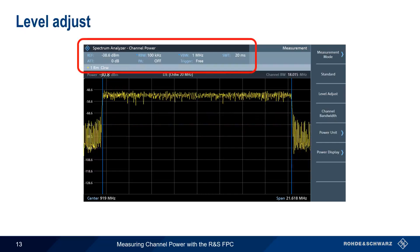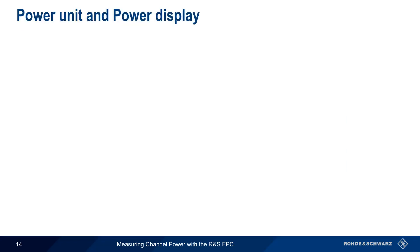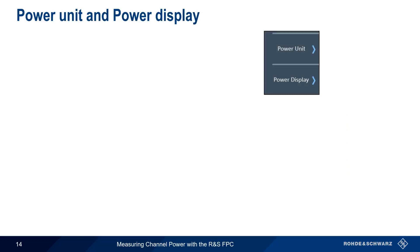Although we can manually set the span, resolution bandwidth, reference level, etc., the Level Adjust button will automatically optimize settings for the chosen channel bandwidth. Power Unit and Power Display can be used to change how we view the measured channel power results.